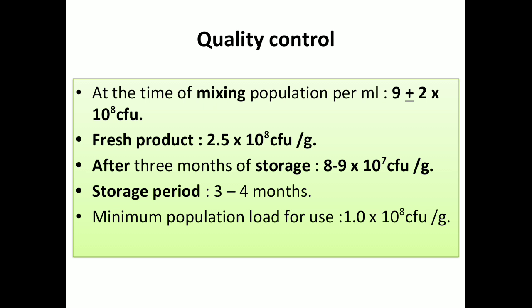Quality control plays a vital role in mass multiplication of biocontrol agents. At the time of mixing, the broth should contain a population of (9 ± 2) × 10⁸ CFU per ml, where CFU stands for colony forming units. The fresh product should contain 2.5 × 10⁸ CFU per gram. The storage period or shelf life is 3 to 4 months, and after storage the population should be 8–9 × 10⁷ CFU per gram. The minimum population load for use is 1 × 10⁸ CFU per gram.